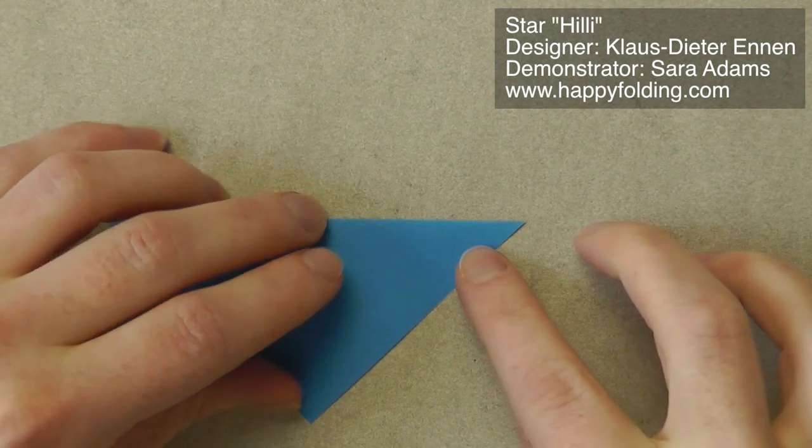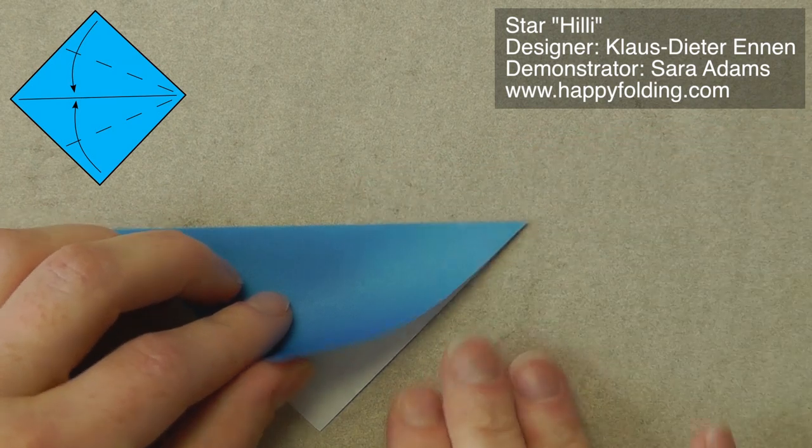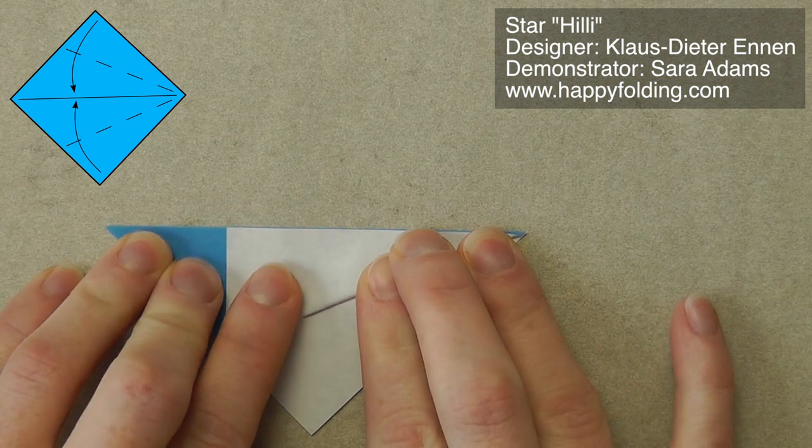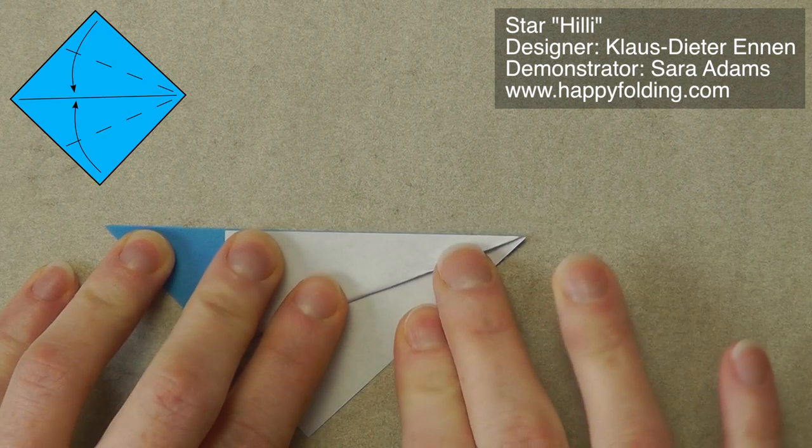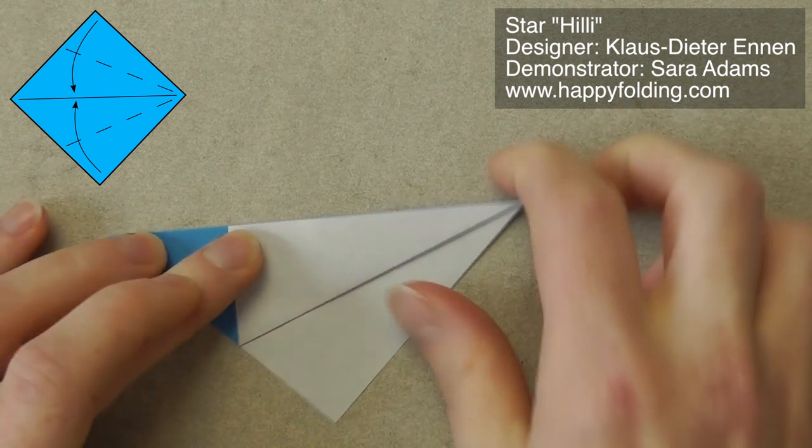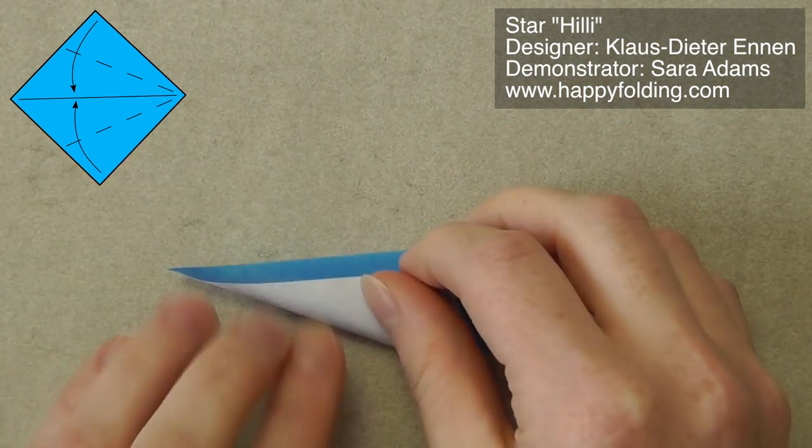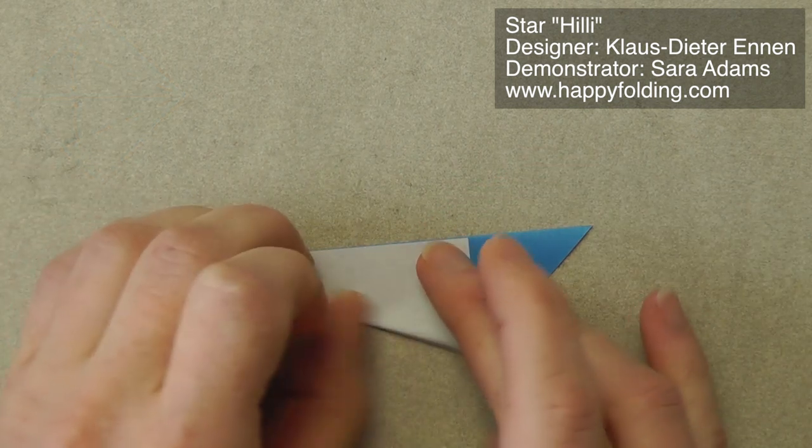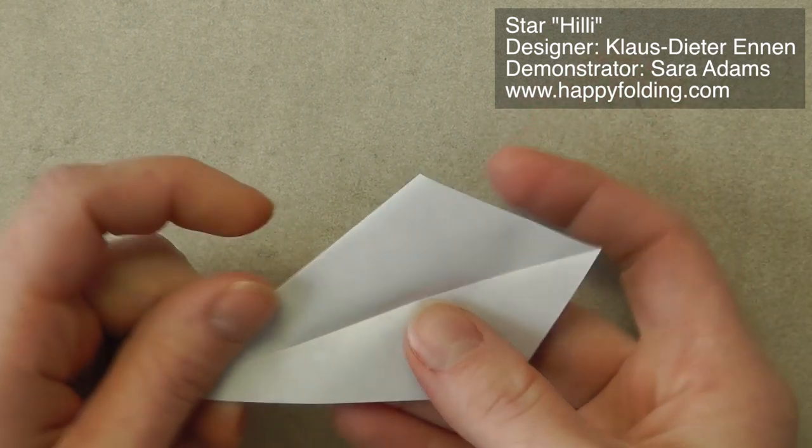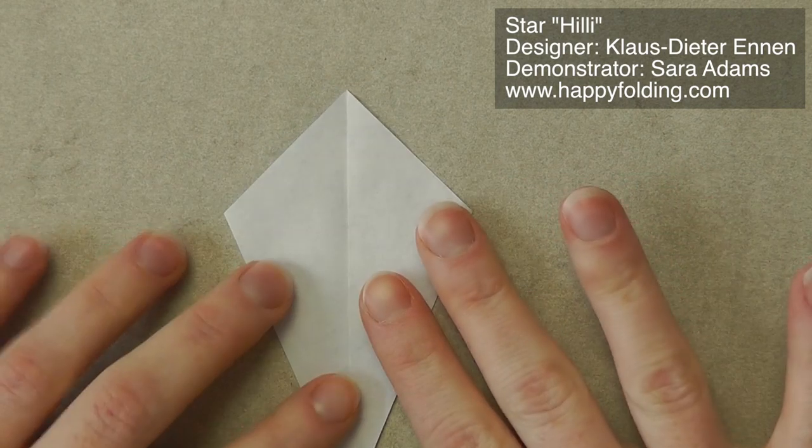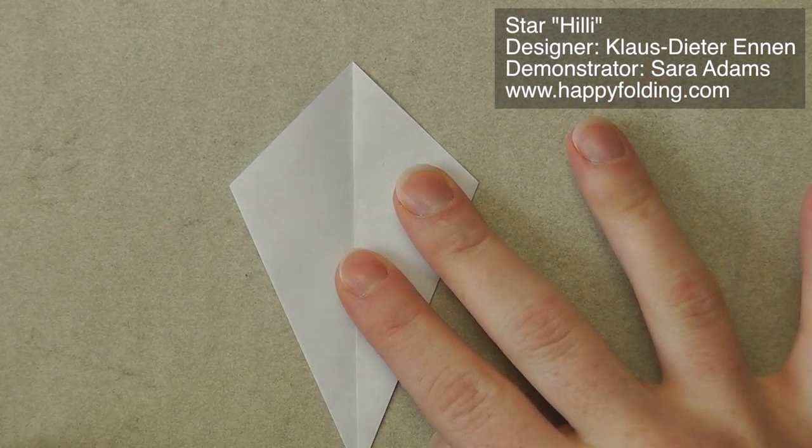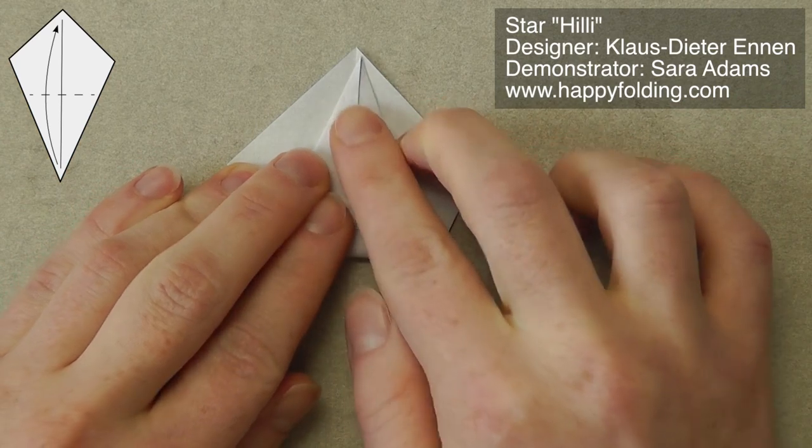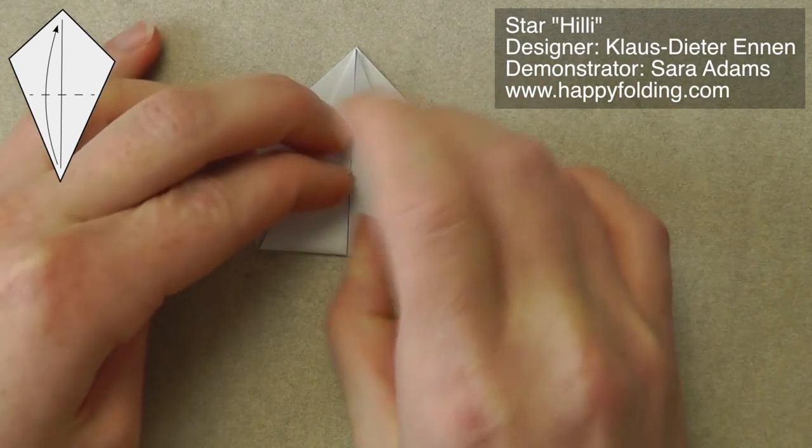Then we're going to rotate and take the raw edge and bring it to the center crease. Then flip over the paper and repeat, which gives you a kite base. Now, we're going to open this up, and we're going to lay the paper flat on the table and take this lower tip and bring it to the upper tip. You really want to have it lying flat on the table so that the paper doesn't drift.